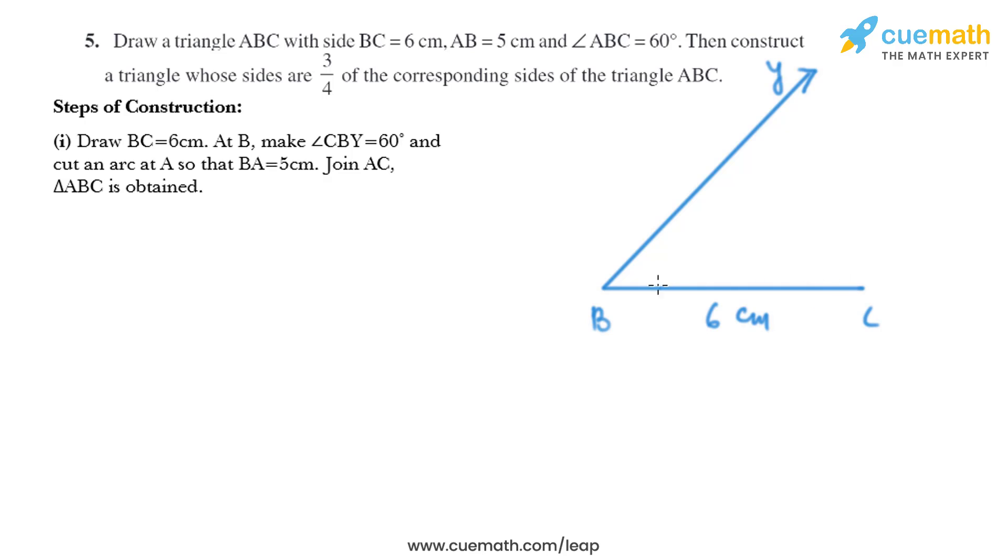Now we have to put the compass at B and we have to take the opening as 5 centimeters and we have to draw an arc that intersects BY and we'll name this point of intersection as A.